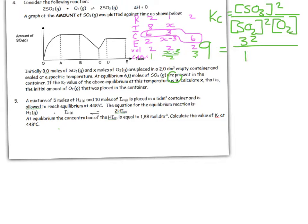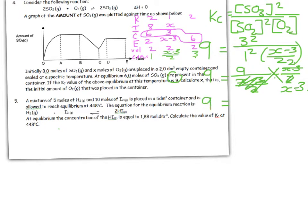Substituting all the values: 9 equals 3² over (1² times (x-3)/2). This equals 9 over (x-3)/2, which is the same as multiplying by 2/(x-3). So 9 equals 18/(x-3). Cross multiplying: 9x - 27 equals 18. Taking out the common 9, we get x - 3 equals 2, and x equals 5.